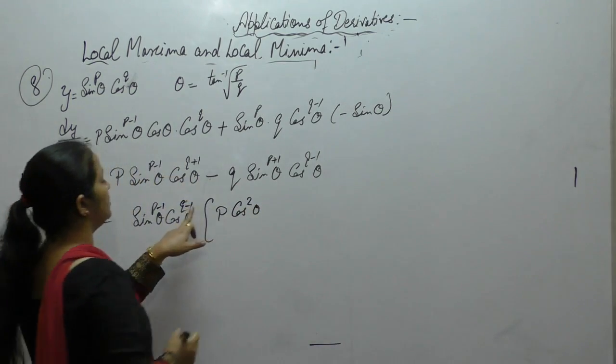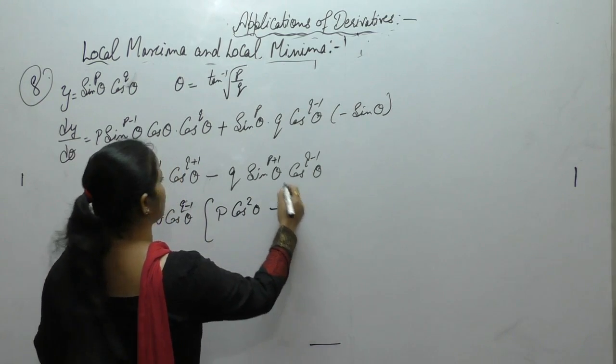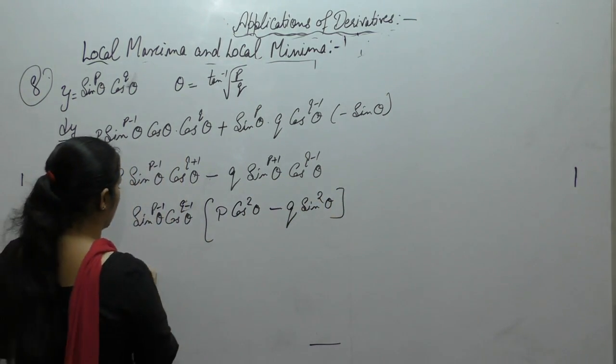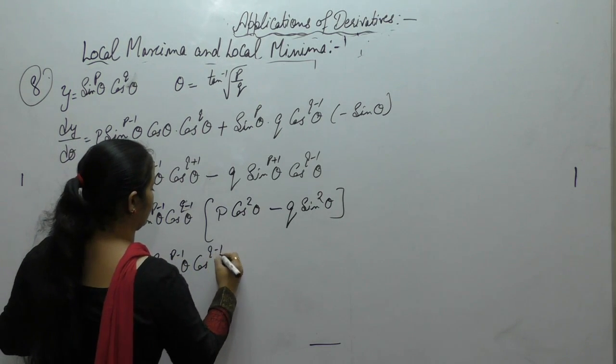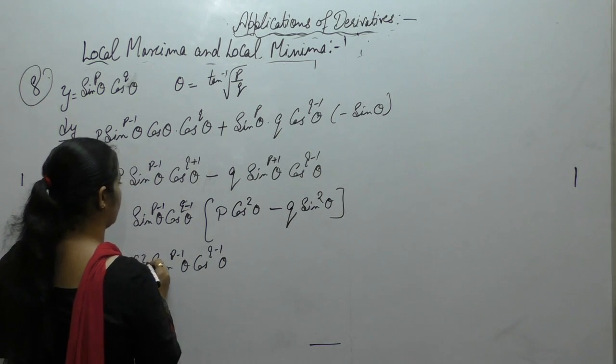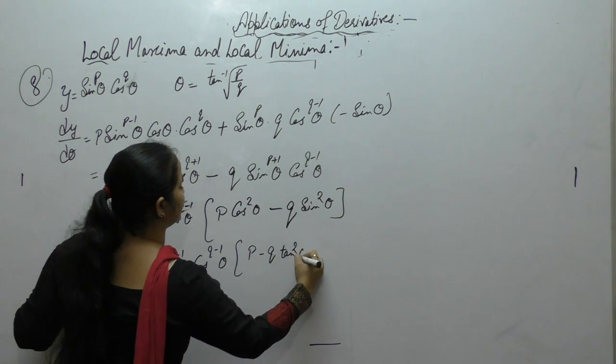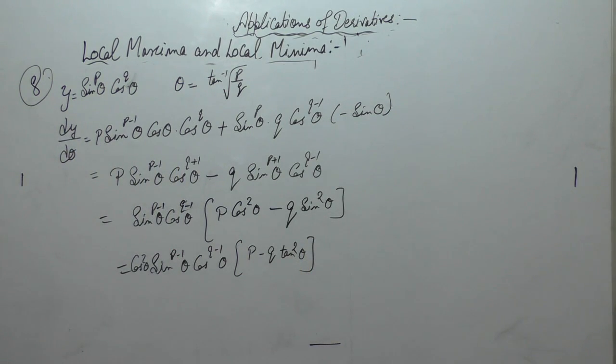cos square 2 minus 1 will be plus 1 minus q sine square. Take cos square common. So b minus q sine upon cos is tan square. Now put first derivative equals to 0.